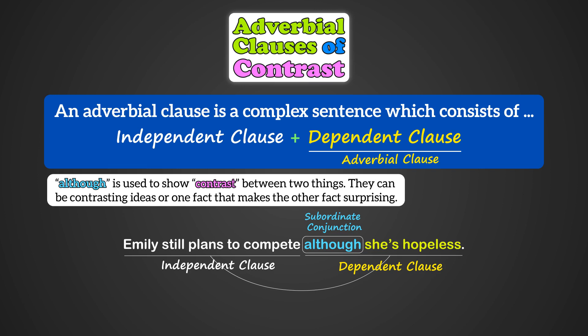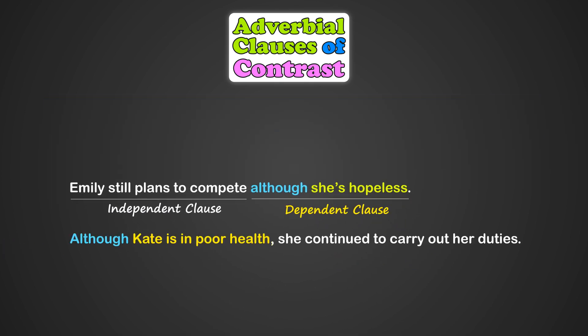They can be contrasting ideas or one fact that makes the other fact surprising. For example, the dependent clause 'although she is hopeless' shows the fact that Emily is hopeless. But surprisingly, in the independent clause, we can see that she wants to compete. Let me give you another example: 'Although Kate is in poor health, she continued to carry out her duties.' Here, the dependent clause is in contrast with the independent clause because when someone doesn't feel okay, they are expected to rest, not to work.